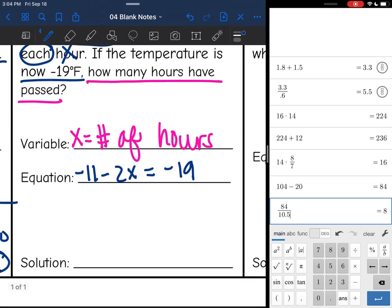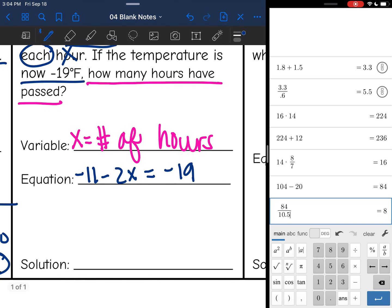Okay, now I'm just going to solve this equation for x to figure out how many hours have passed. So I'm going to add 11 to both sides, and I get negative 2x equals negative 8 divided by negative 2. And negative 8 divided by negative 2 is 4, so that means 4 hours have passed.